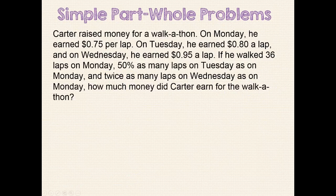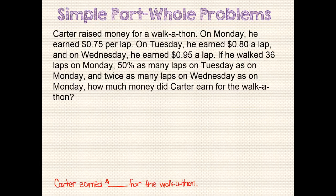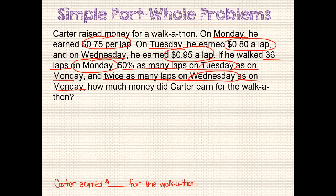Here's our last part-whole problem. Carter raised money for a walk-a-thon. On Monday, he earned $0.75 a lap. On Tuesday, he earned $0.80 a lap. And on Wednesday, he earned $0.95 a lap. If he walked 36 laps on Monday, 50% as many laps on Tuesday as on Monday, and twice as many laps on Wednesday as on Monday, how much money did Carter earn for the walk-a-thon? Our problem statement can be: Carter earned blank dollars for the walk-a-thon. When rereading the problem, we identify the important information.